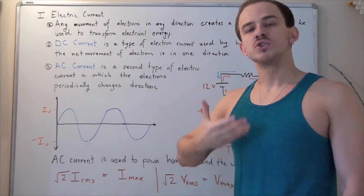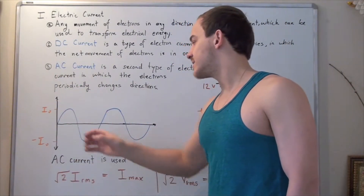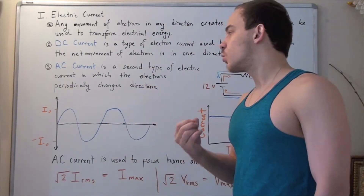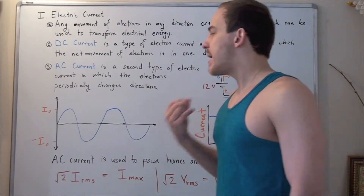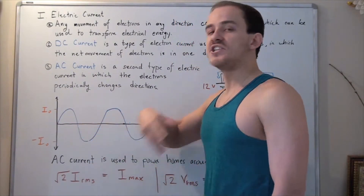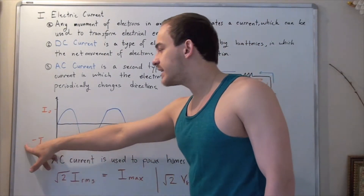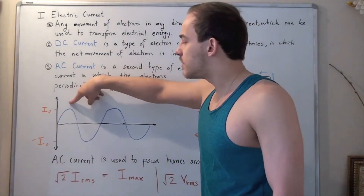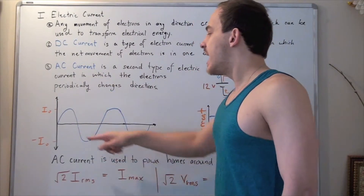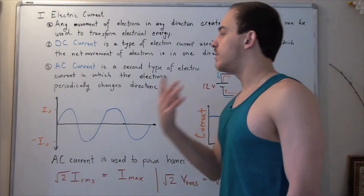If we graph on the y-axis our current and on the x-axis our time, we would get a sine wave. Our current will reach the maximum I-naught, and then it will begin to drop, reach zero, and change direction, then reach a minimum of negative I-naught. So it has a maximum and a minimum, as well as values in between, and this will go on forever as long as we have a voltage supplying our current.